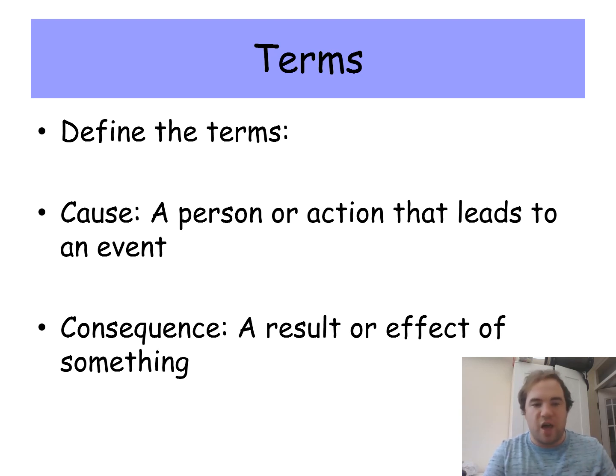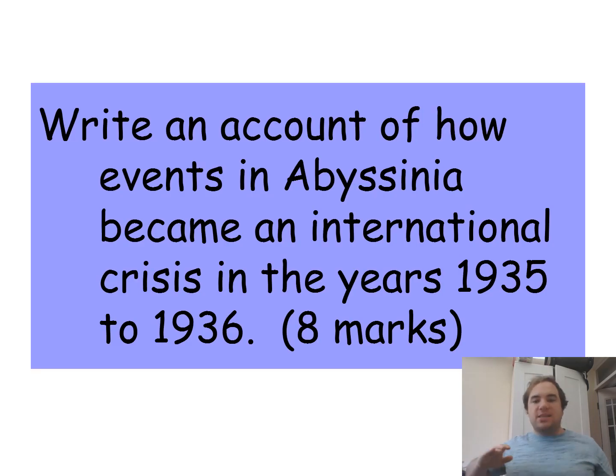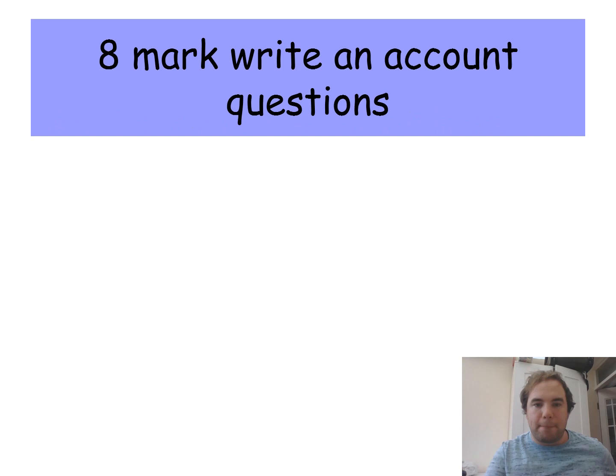Now when we get into what the question actually is, it is: write an account of how events in Abyssinia became an international crisis in the years 1935 to 1936. It's an 8-marker. So the first thing to do is to not do this and start looking unsure and confused.